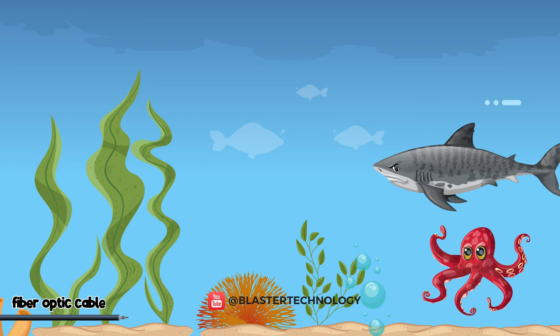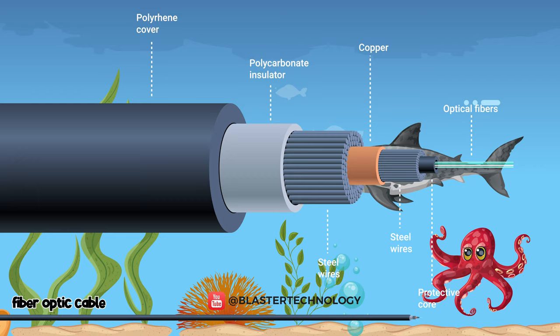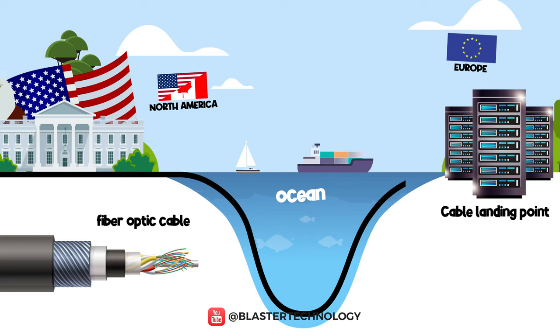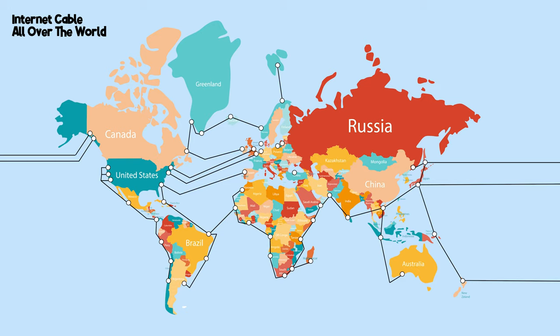The cables are very, very thick to protect the optical fiber inside, which is very fragile and sensitive. These cables are connected to landing stations located on the shores of the oceans, and from there, the internet goes to an entire continent forming a huge network.